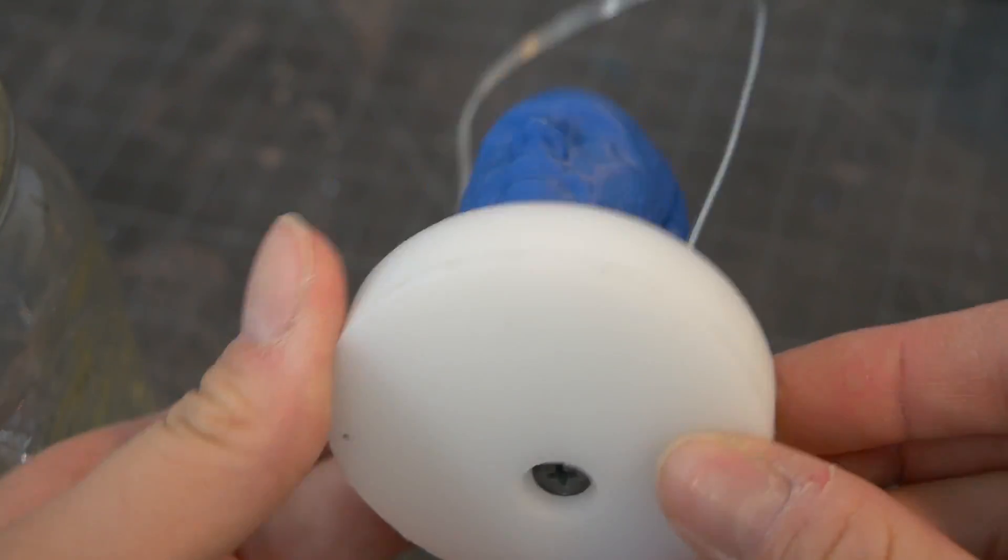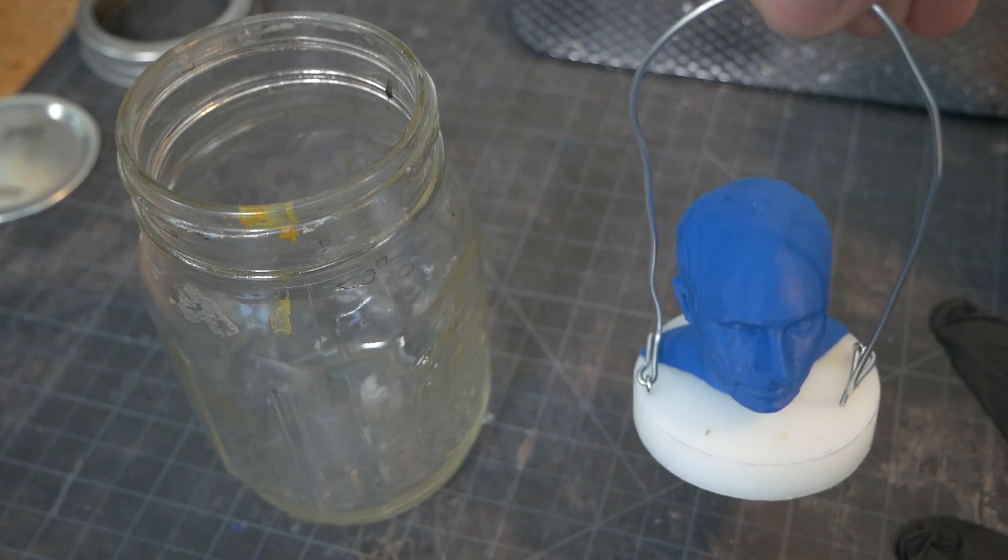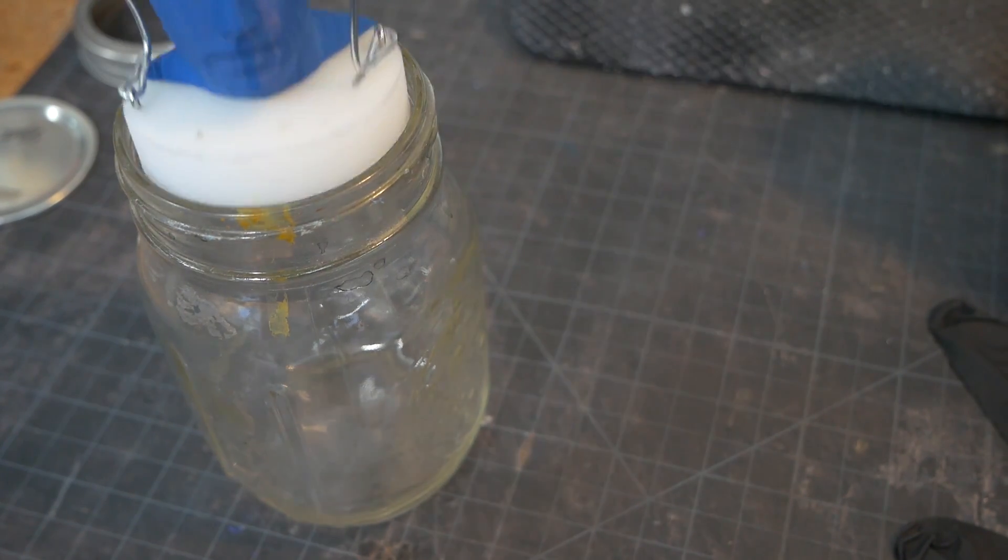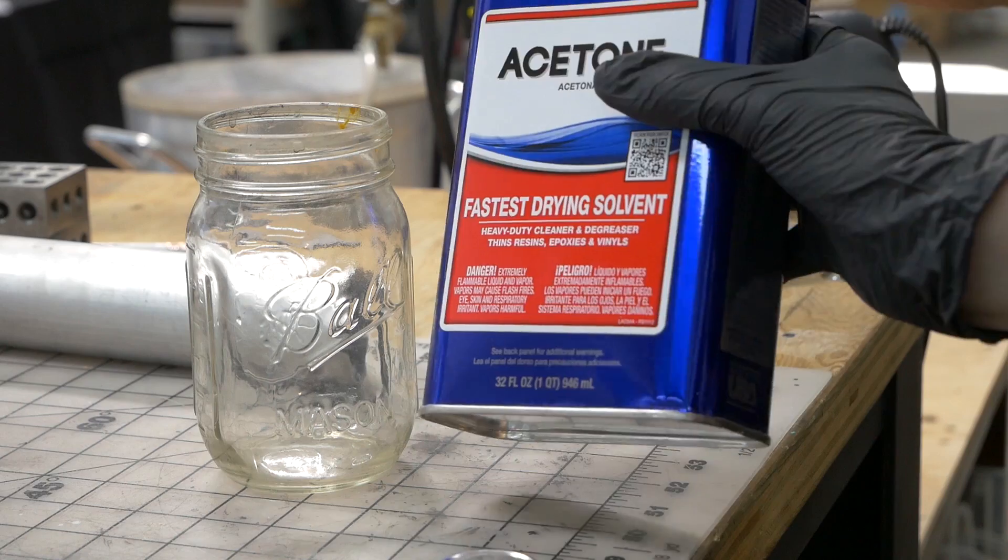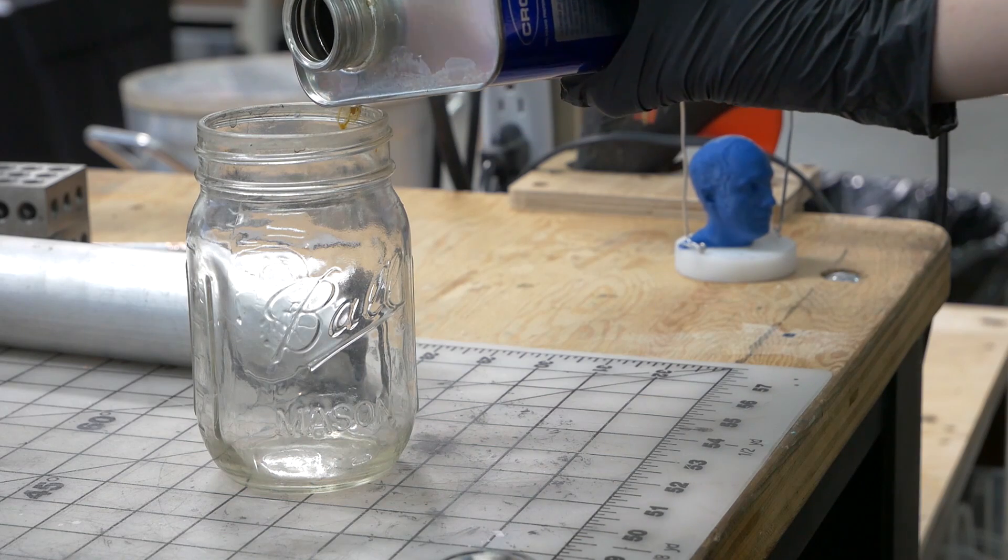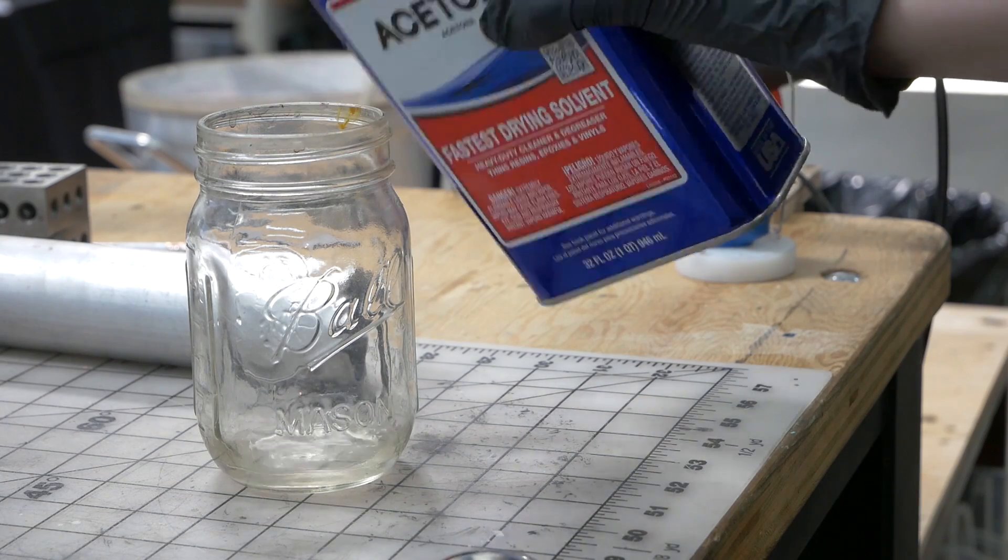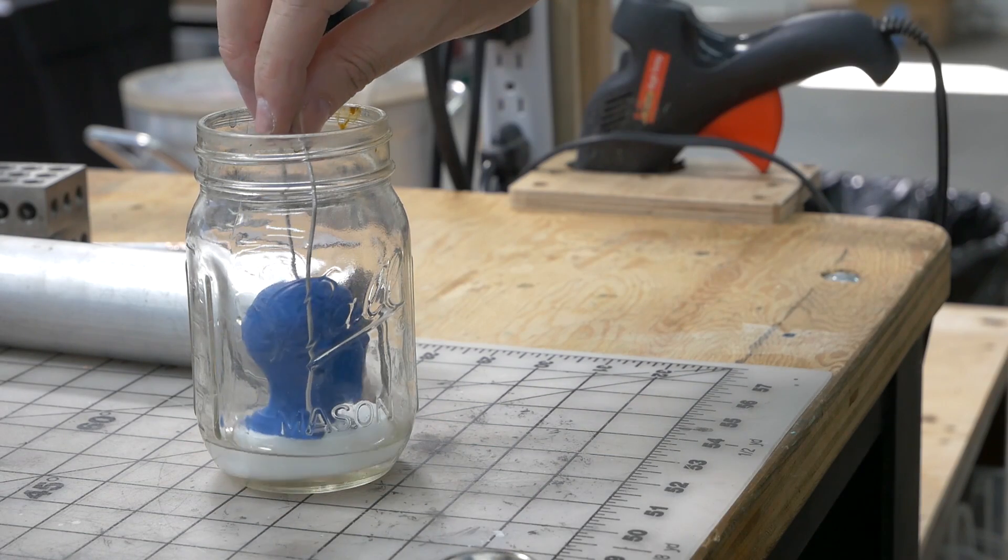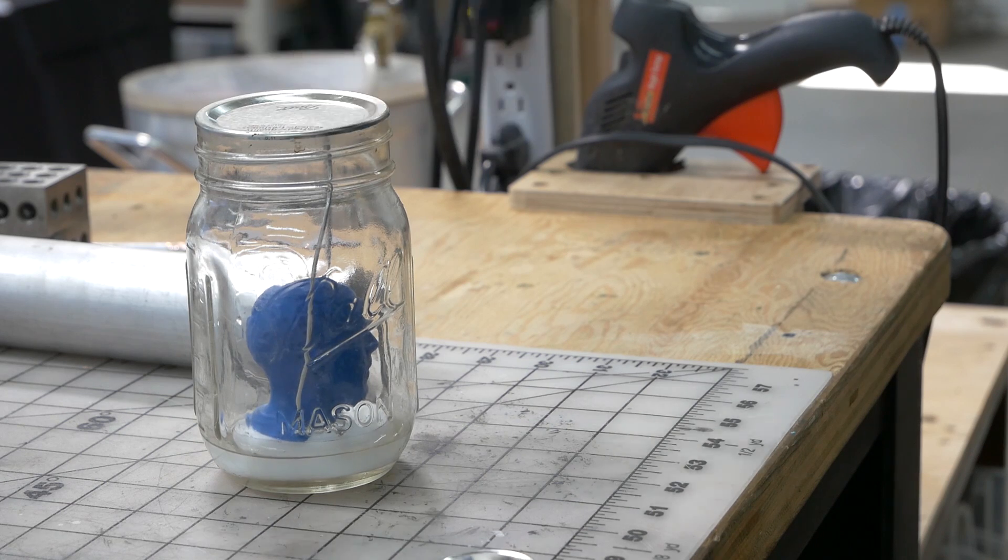I'll link a great article in the description that goes over this process. Apparently the type of ABS and even the color can affect how long the filament needs to be acetone exposed. We made a little stand and caddy to get the print in and out of the mason jar. You don't want to touch the print at all during this process.